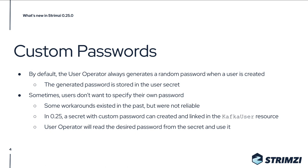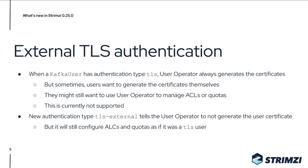Also, because the user secret was managed by the user operator itself, it didn't always work well with different GitOps tools. So in 0.25 there's a new way to do this: you can create your own secret with the custom password you want to use, then just link it inside the Kafka user resource. When the user operator sees it, it will read the desired password from your secret and use it to configure the user, creating the actual user secret with the password, the JAAS configuration, and all the other things.